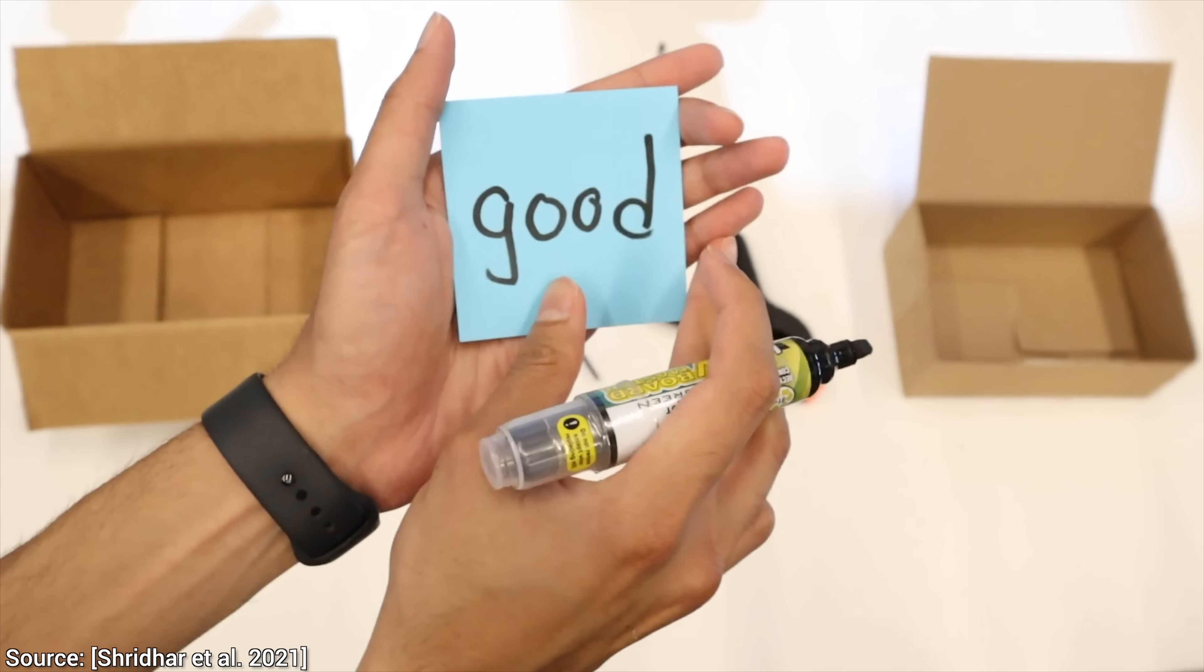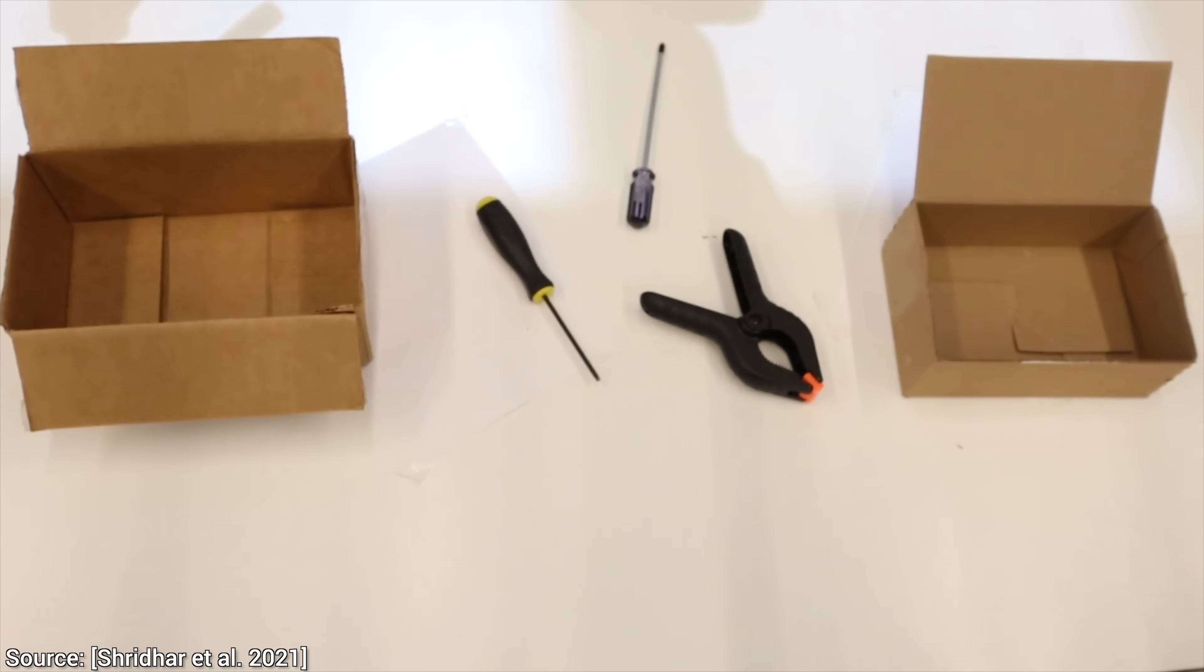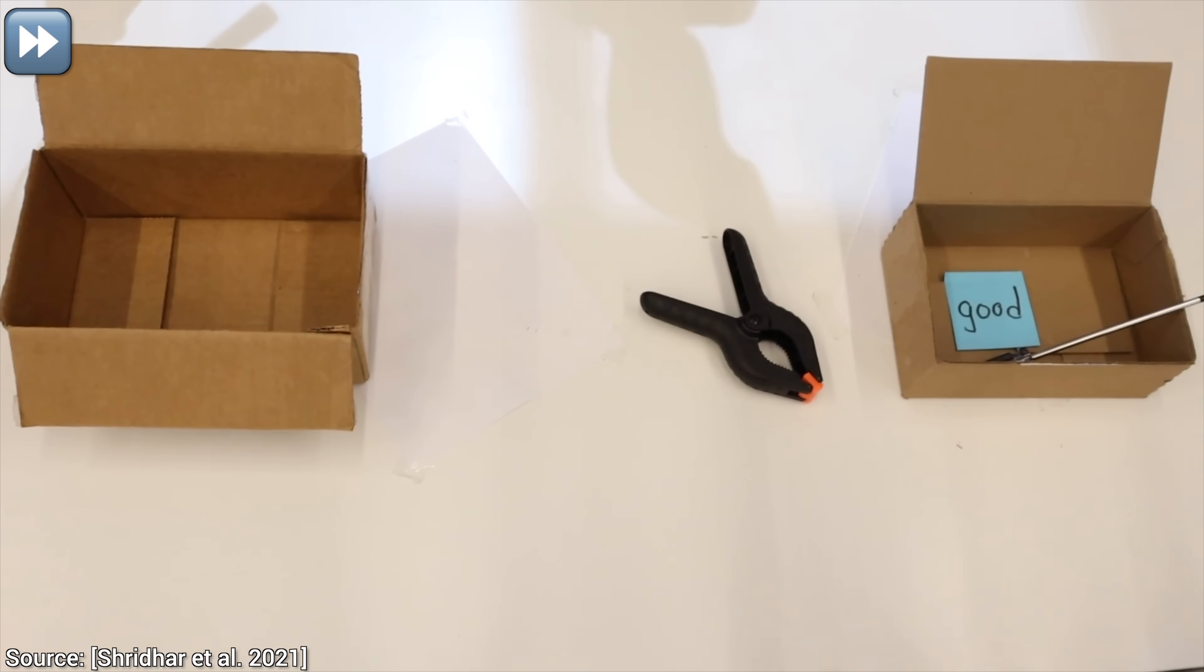We can label two boxes that will contain the good and bad stuff. And then, instruct the AI as follows. Place the blue screwdriver in the bad box. This worked well, and it will work, even if we try to be a bit more tricky, and swap the labels.